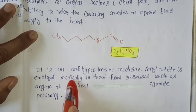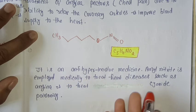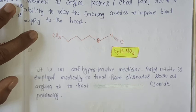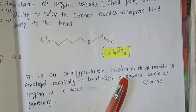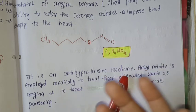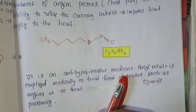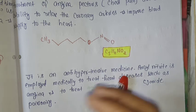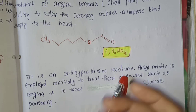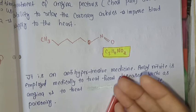Amyl nitrate is employed medicinally to treat heart disease such as angina and antidote to cardiac cyanide poisoning. It lowers blood pressure and stabilizes the vasomotor center in the medulla. Its action is rapid but its duration is very short. It is not administered to patients suffering from coronary thrombosis. Sometimes it is used to treat whooping cough, seasickness, and asthma.